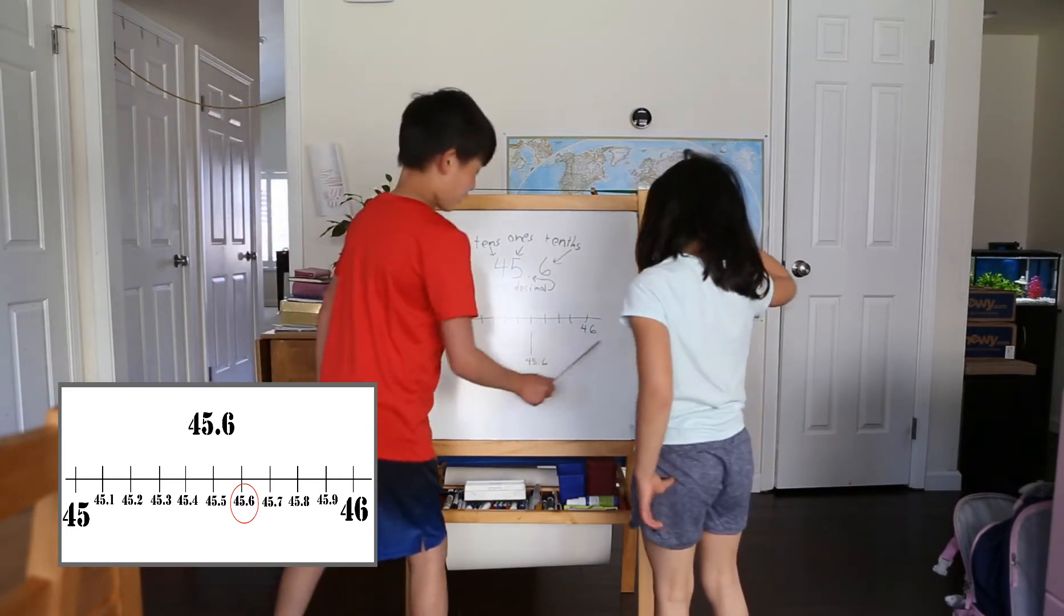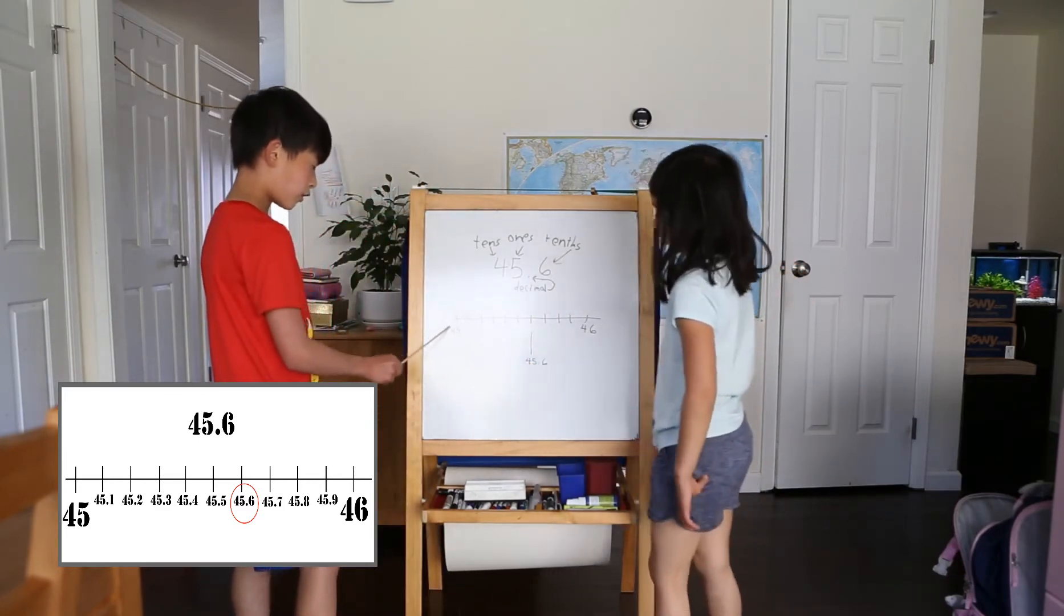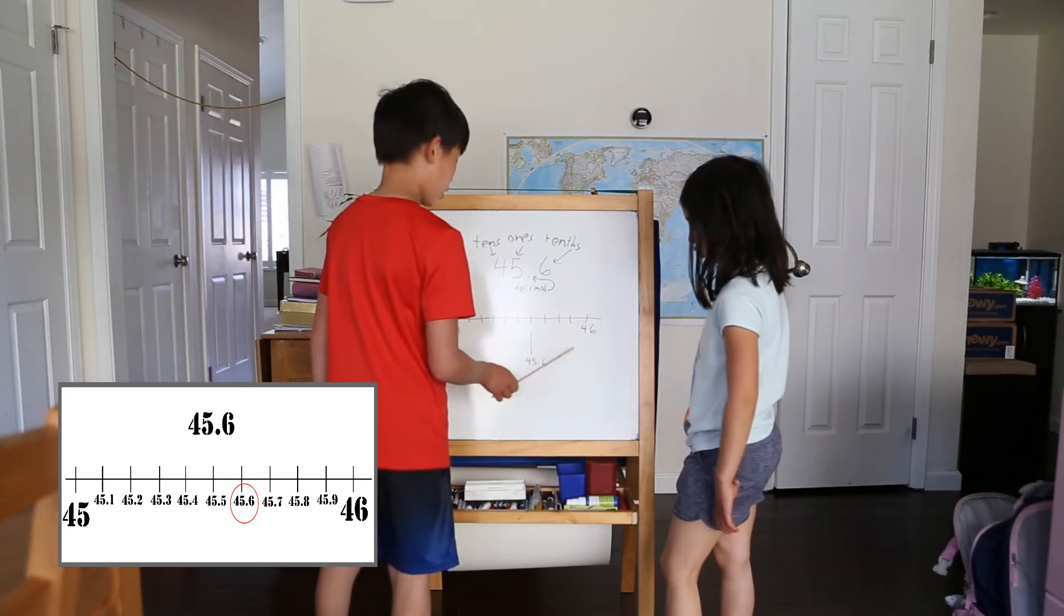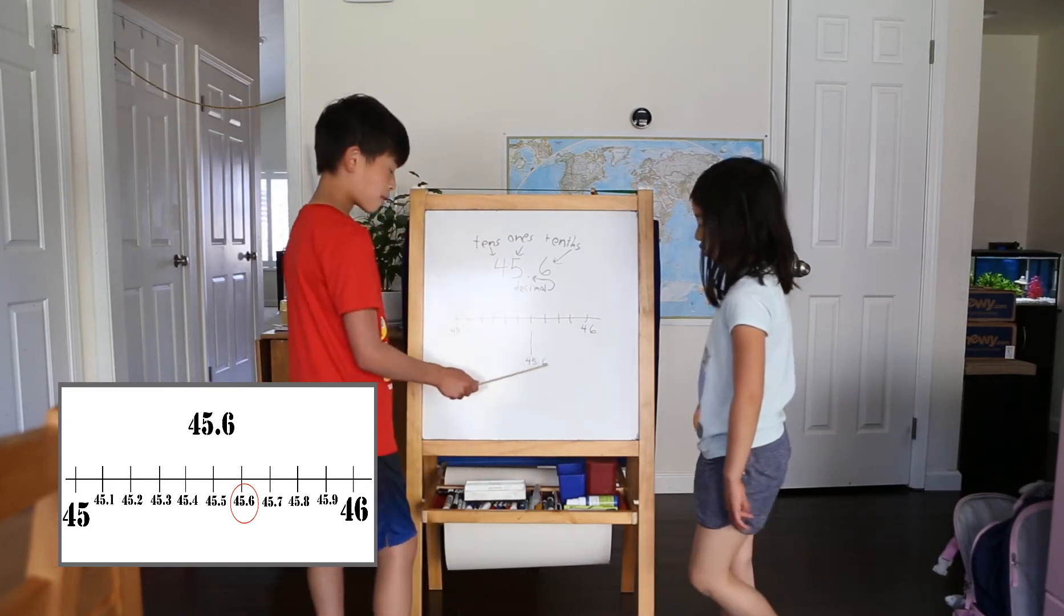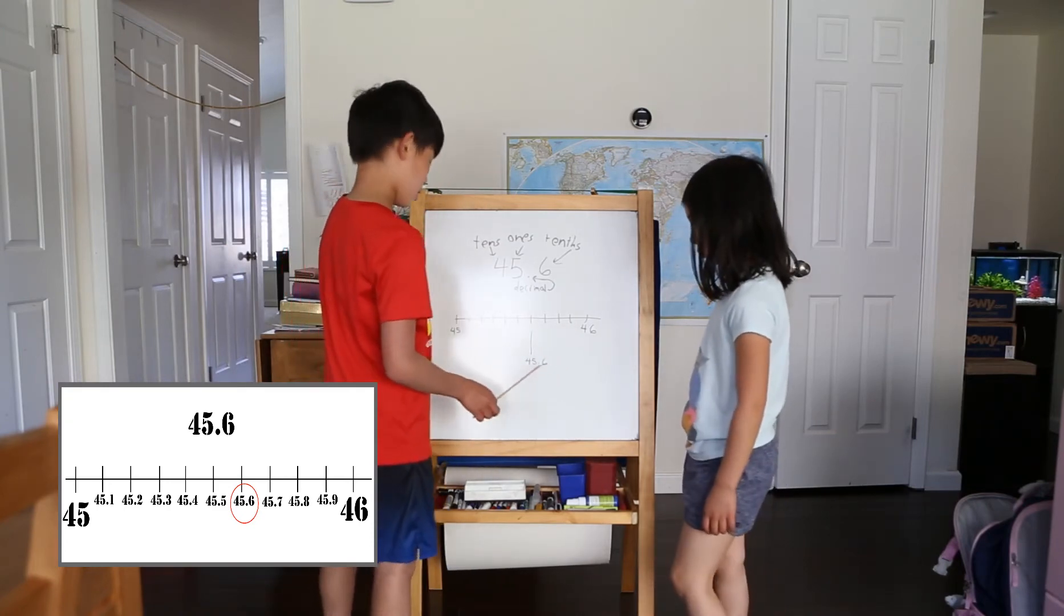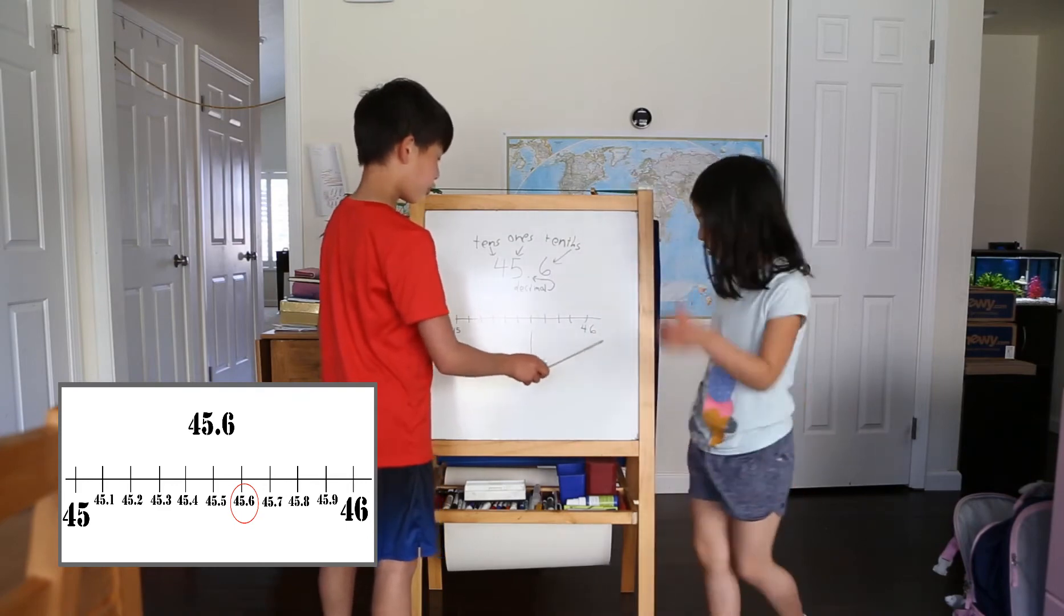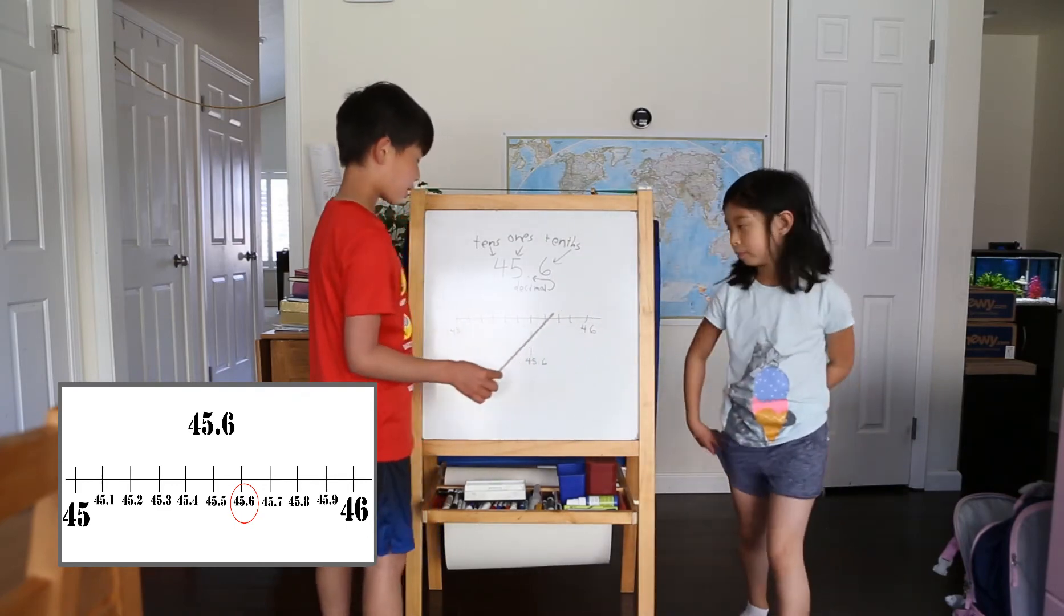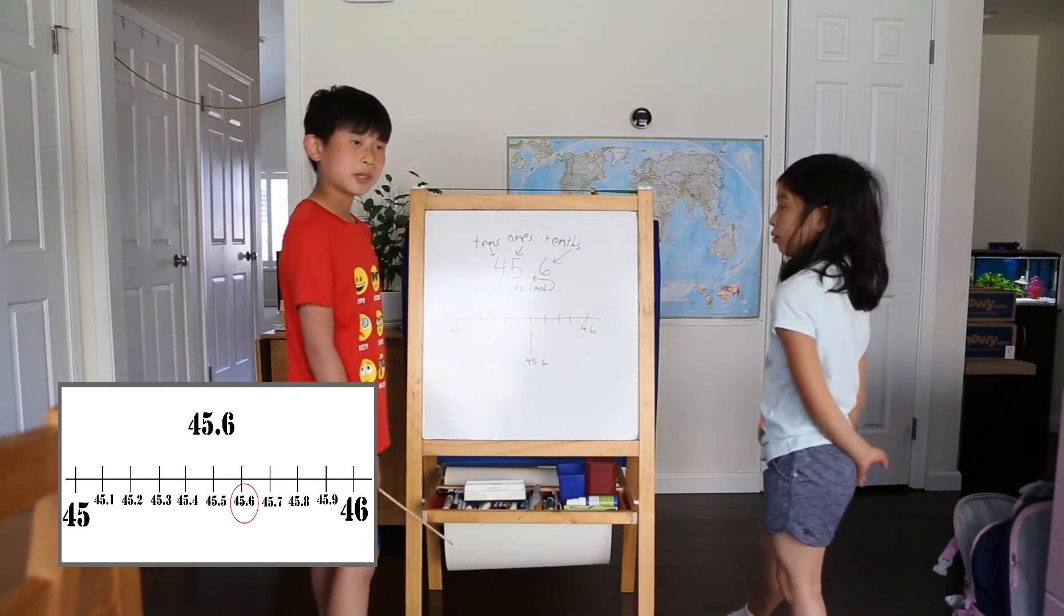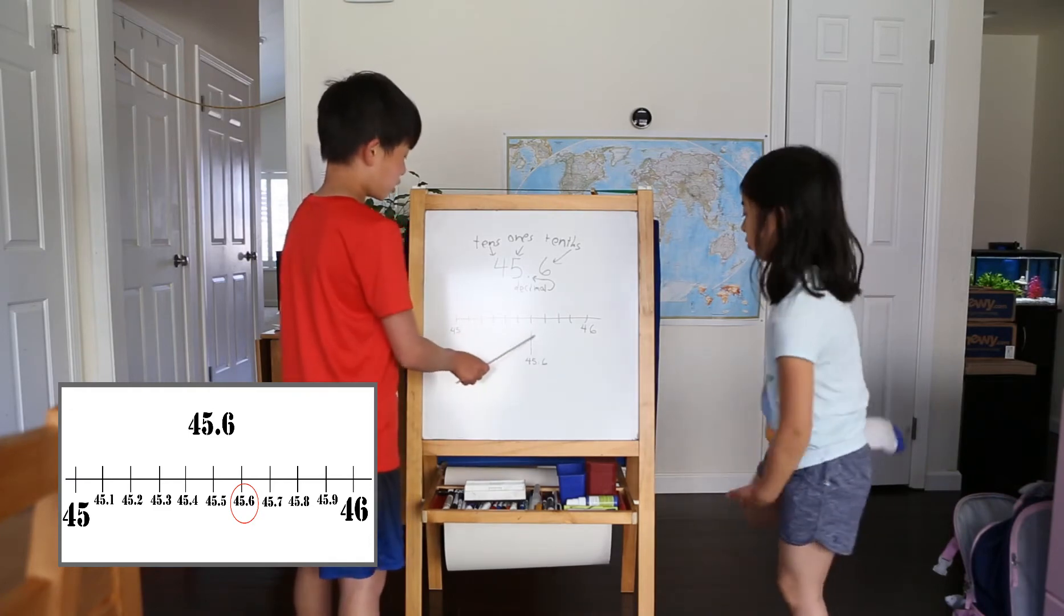This is our number line. It has 45 on it and 46 on one end. 45.6 is almost 46, but it's not, because numbers aren't always exact.